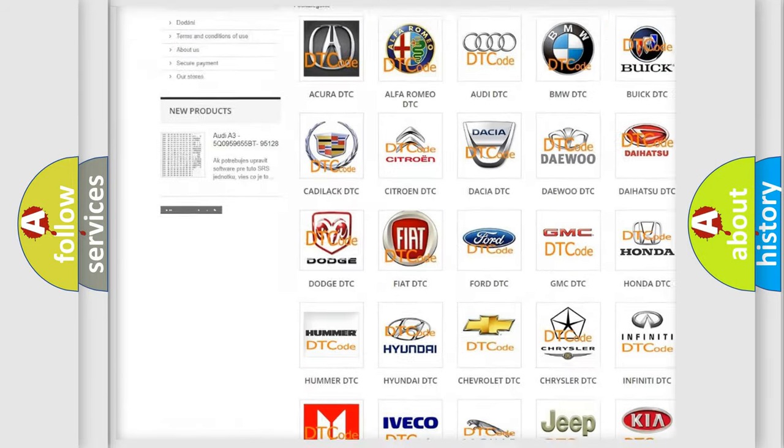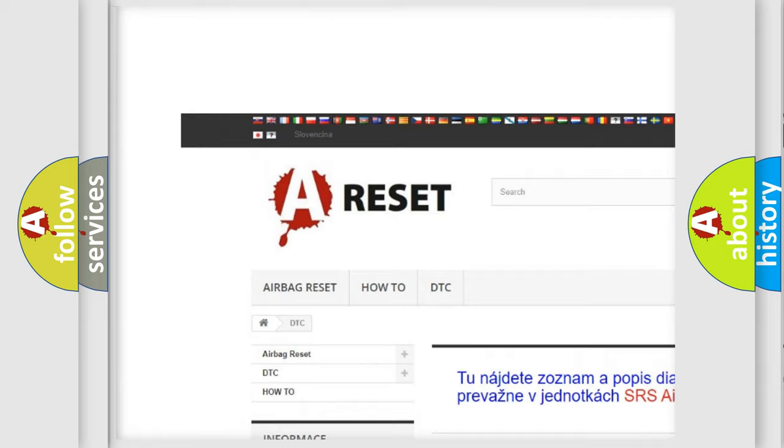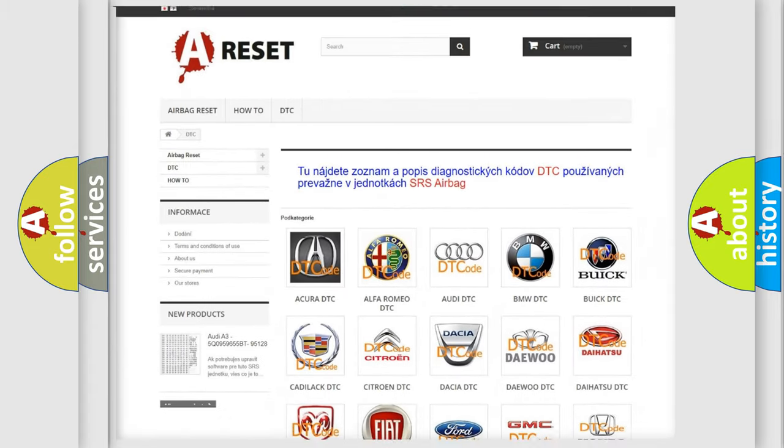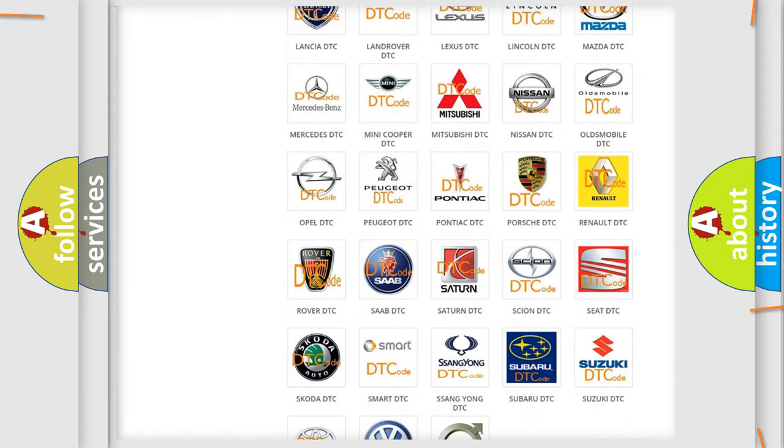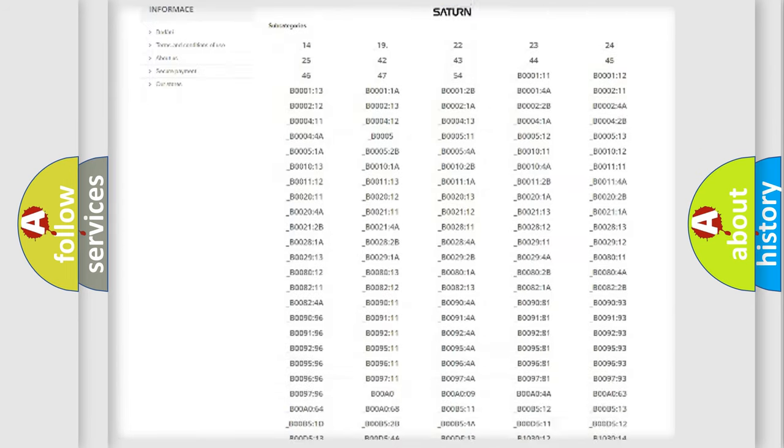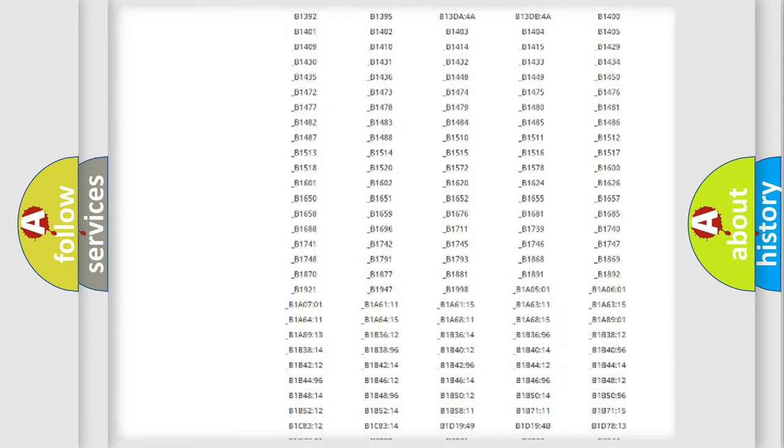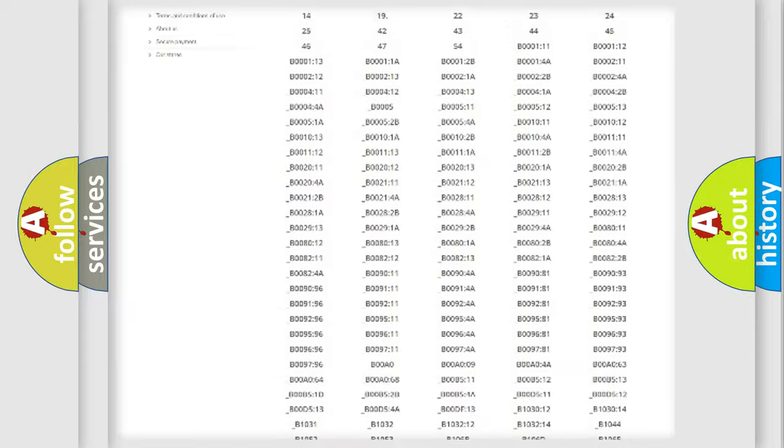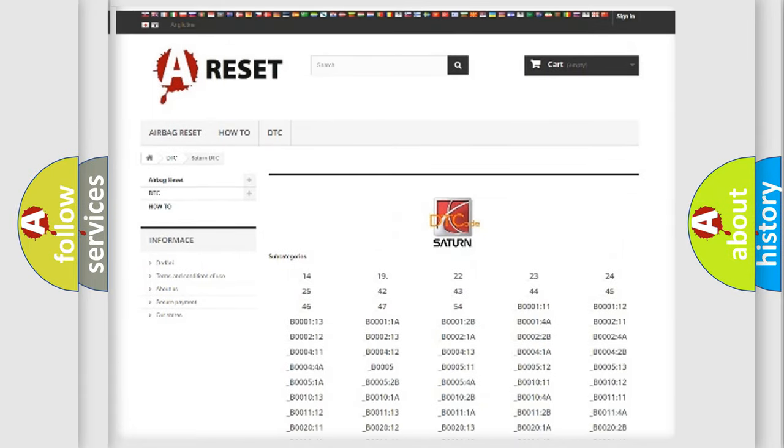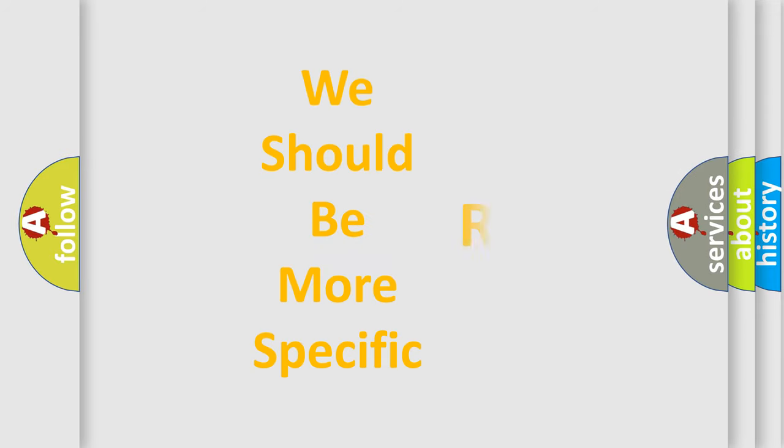Our website airbagreset.sk produces useful videos for you. You do not have to go through the OBD2 protocol anymore to know how to troubleshoot any car breakdown. You will find all the diagnostic codes that can be diagnosed in Saturn vehicles, also many other useful things. The following demonstration will help you look into the world of software for car control units.